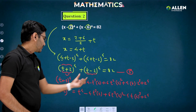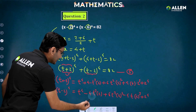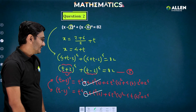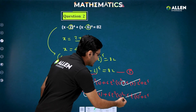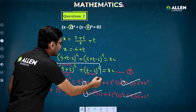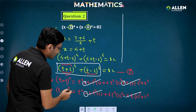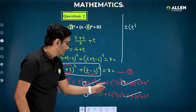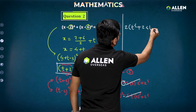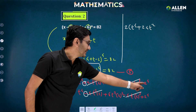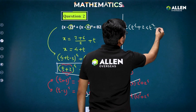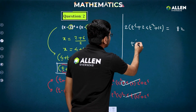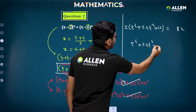When we add the two expansions, the odd-power terms cancel: the 8t³ terms cancel and the 32t terms cancel. What remains is 2t⁴ + 2·24t² + 2·16 = 82. Dividing by 2 gives t⁴ + 24t² + 16 = 41, and taking 41 to the left side yields t⁴ + 24t² - 25 = 0.